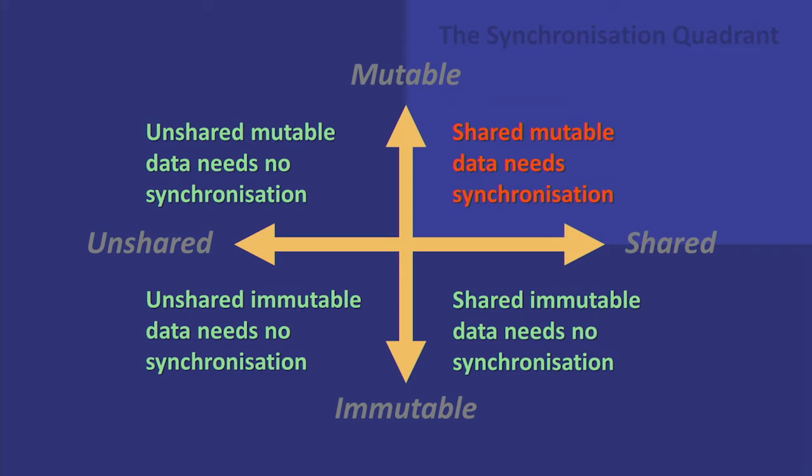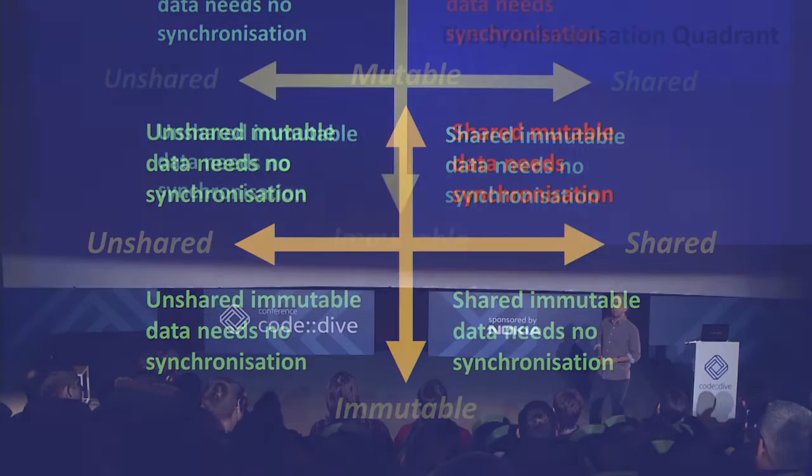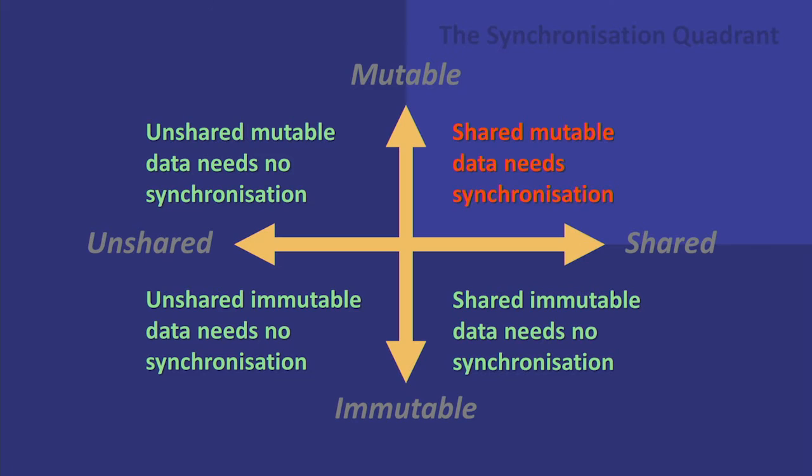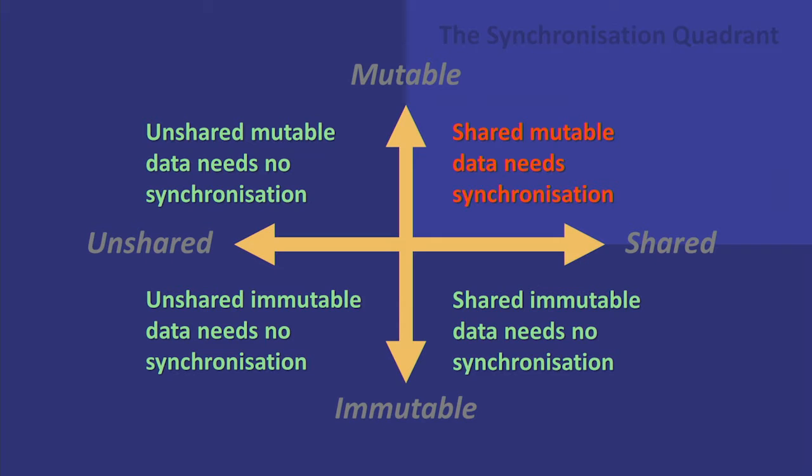How do we end up here? Historically, before threads became common, all code was by definition on the left-hand side — in the unshared quadrant. Because if you only have one thread, you cannot share data, and it's automatically safe. The point here is that historically we have chosen to be very imperative about how we view code, for very good reasons based on resource availability and compiler technology. So naturally, we didn't just gravitate to the left-hand side — we gravitated to the top left-hand side. When we added concurrency, all we did was move right from where we were, and unfortunately that took us straight into the synchronization quadrant.